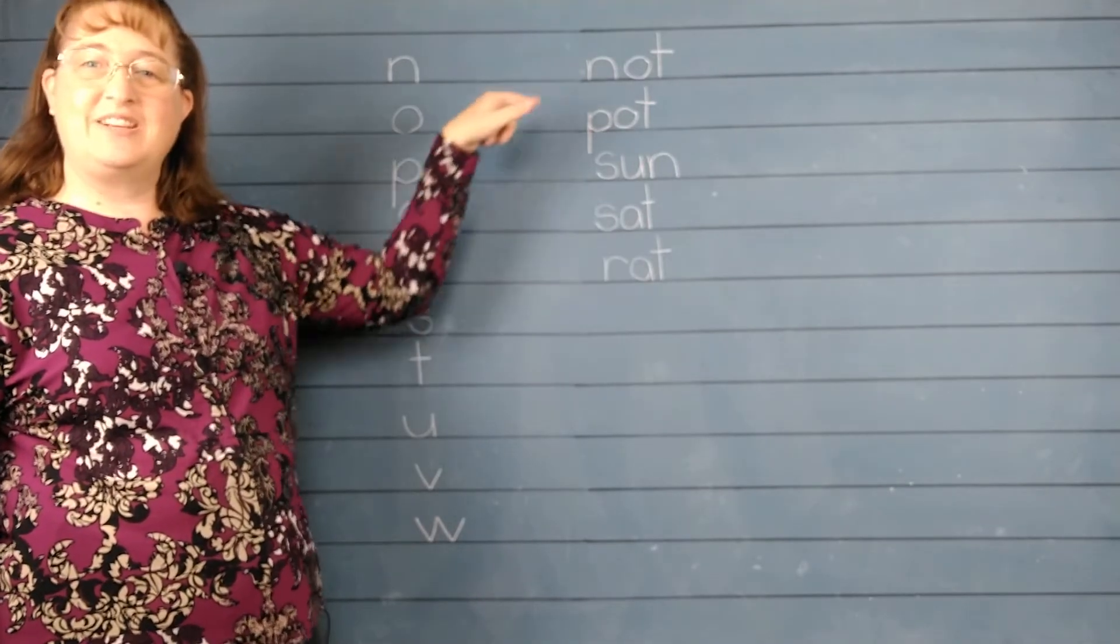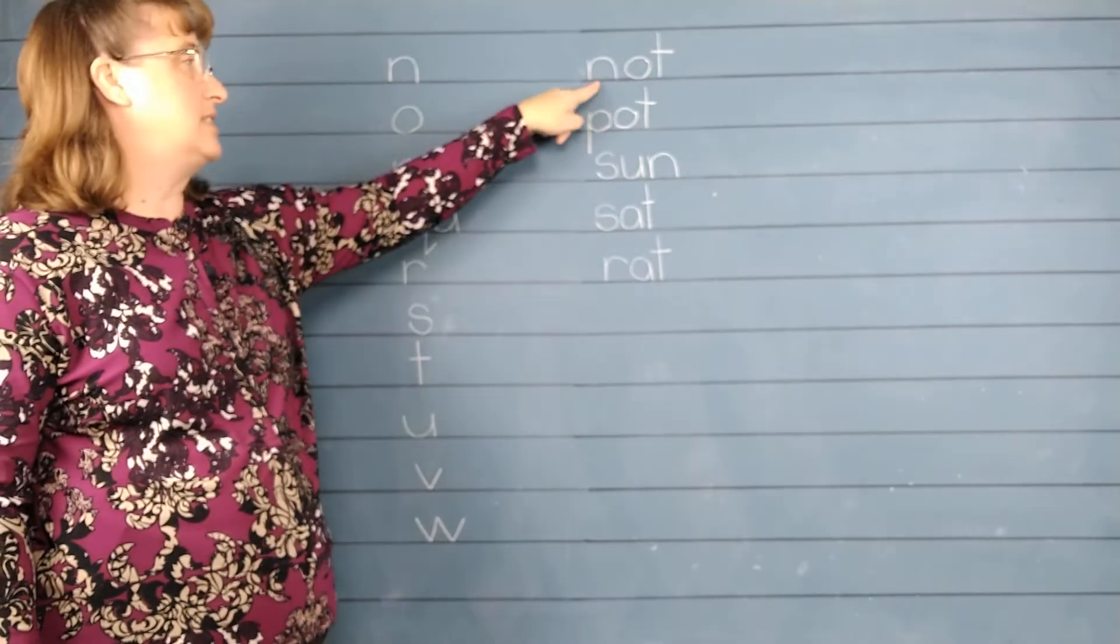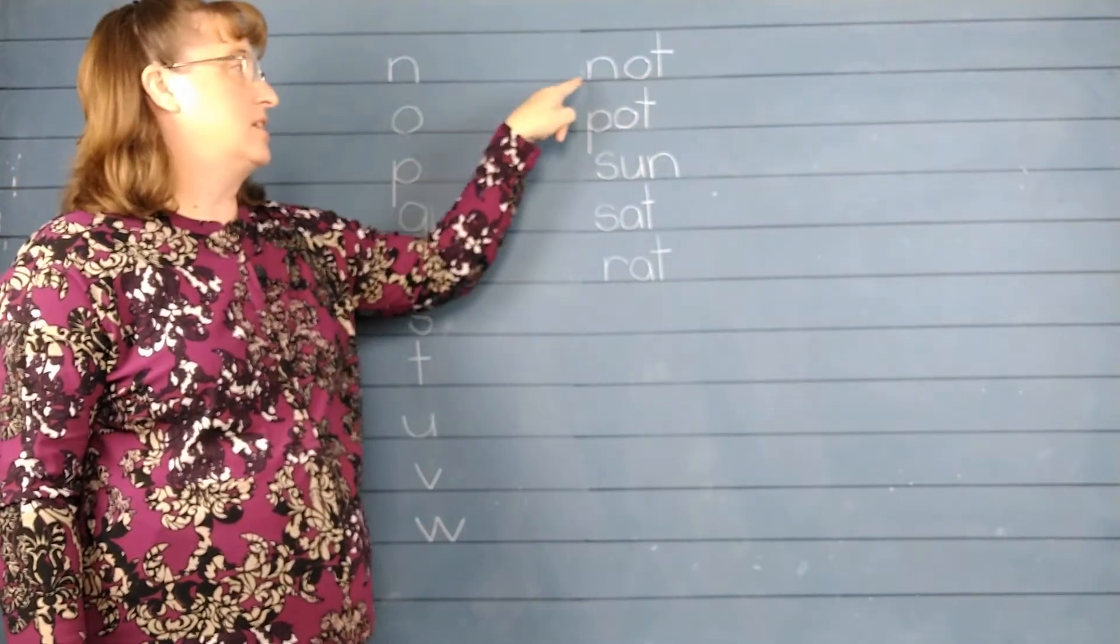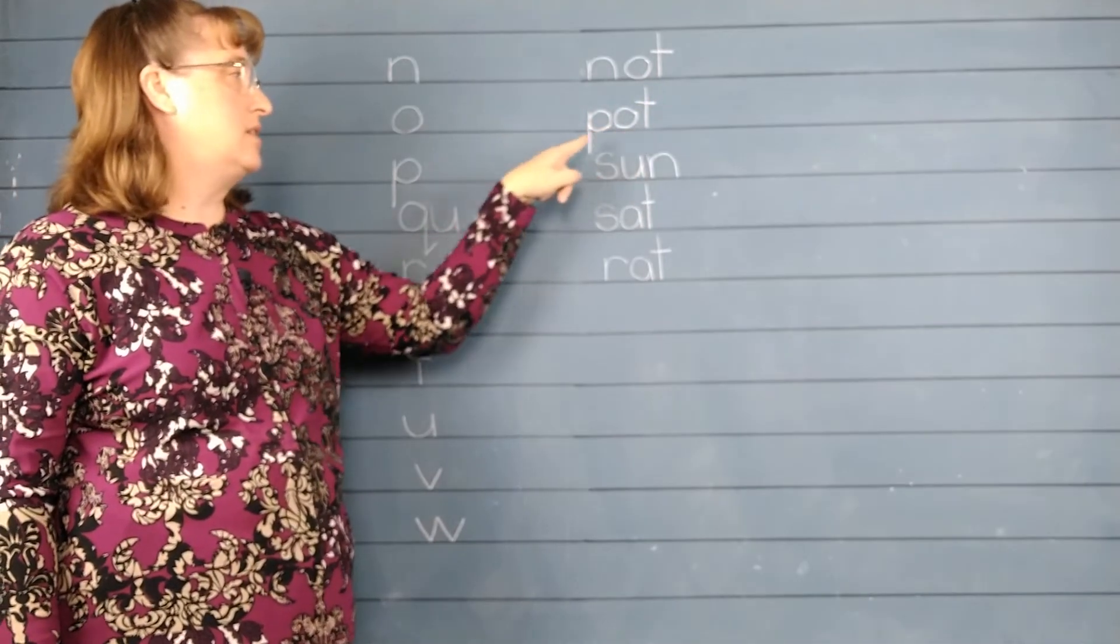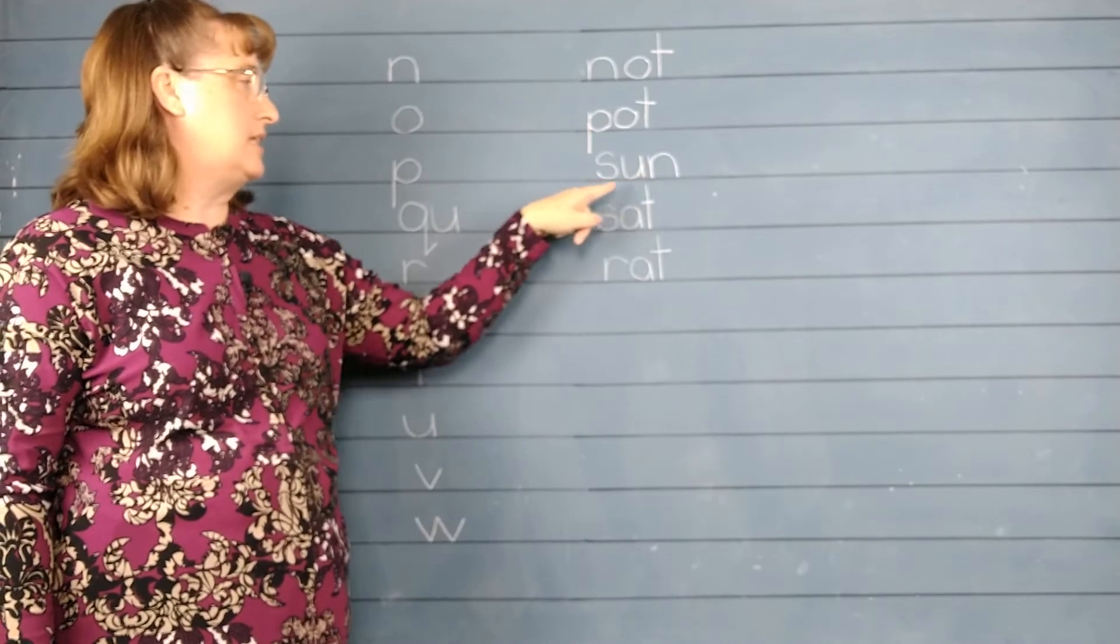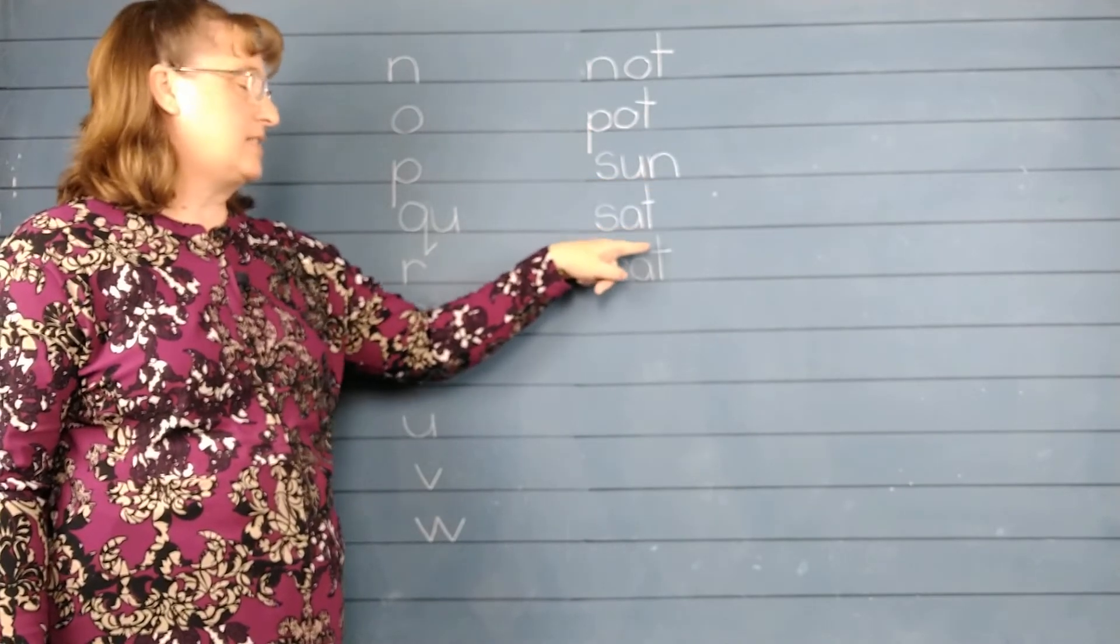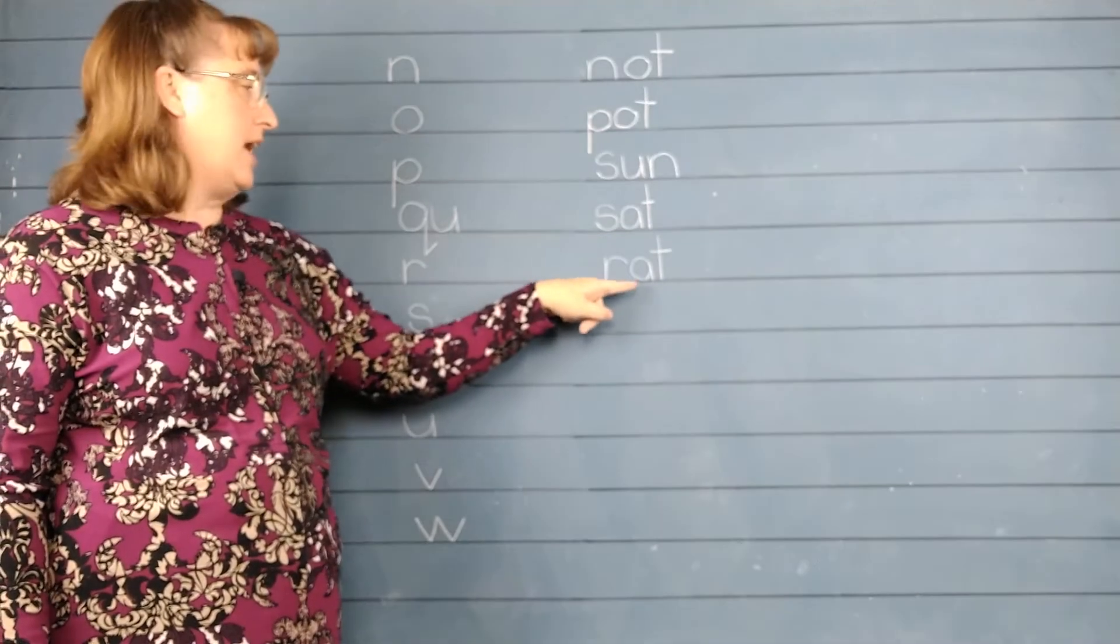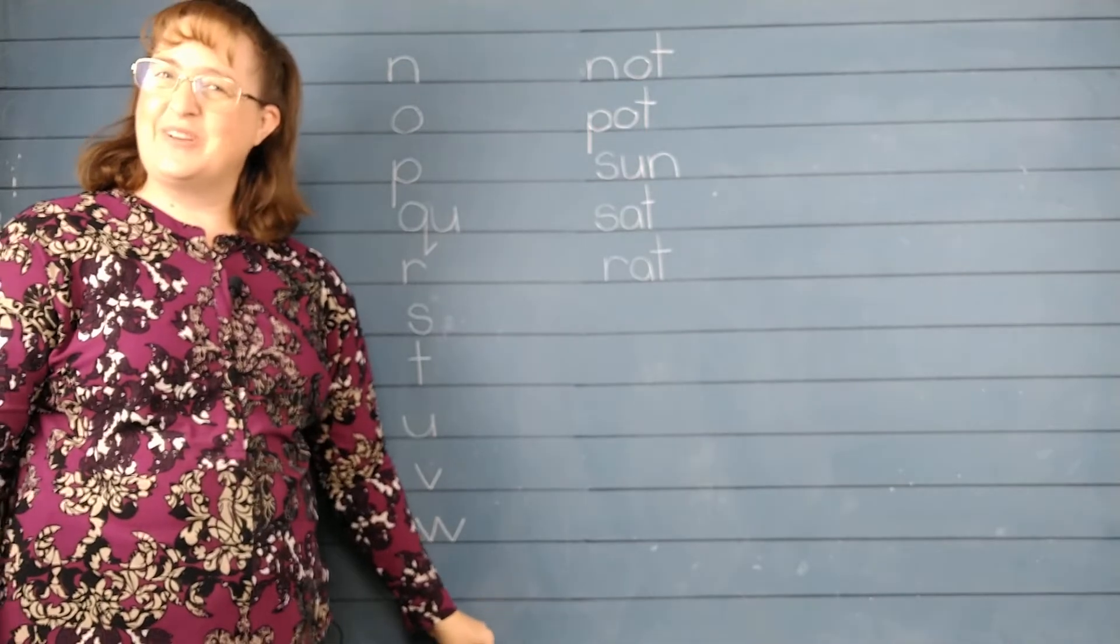Let's sound and read all of these words. We're going to give the sounds for all of the letters. N-A-T. Not. P-A-T. Pot. S-U-N. Sun. S-A-T. Sat. R-A-T. Rat. Good job reading with me.